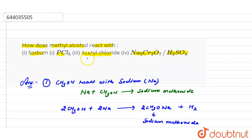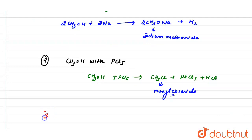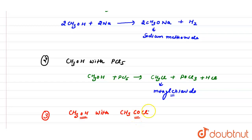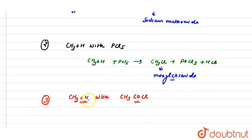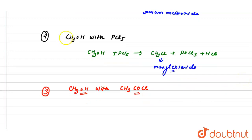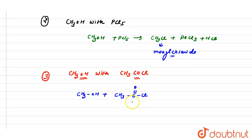Now we see another reaction — methanol with acetyl chloride, that is CH₃COCl. When alcohols react with an acid halide, the hydrogen of the OH group is replaced by the acyl group present in the acid halide.